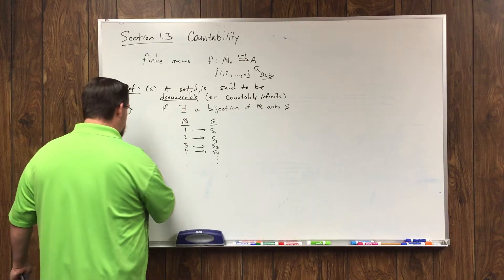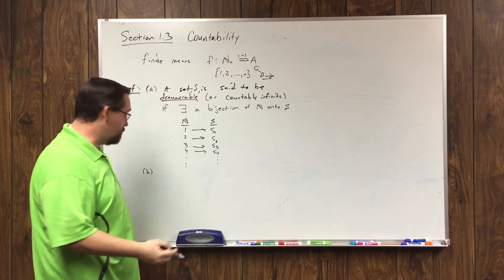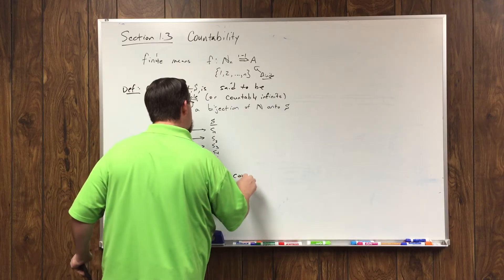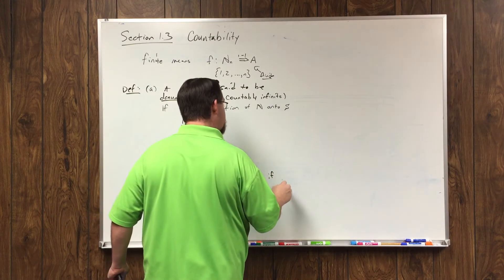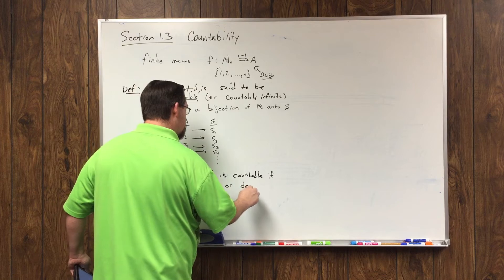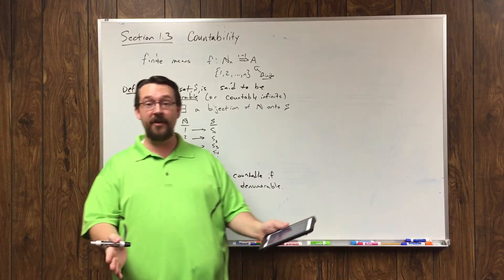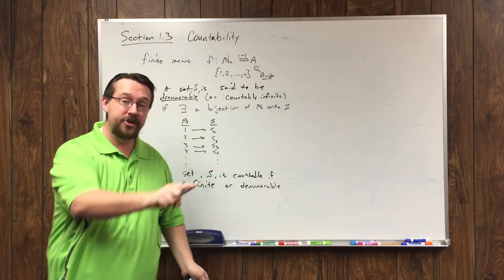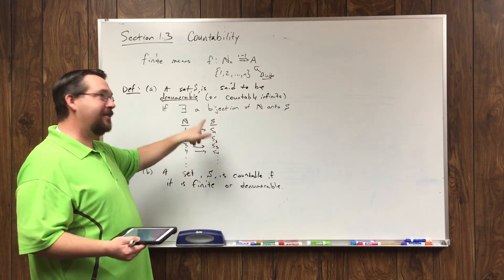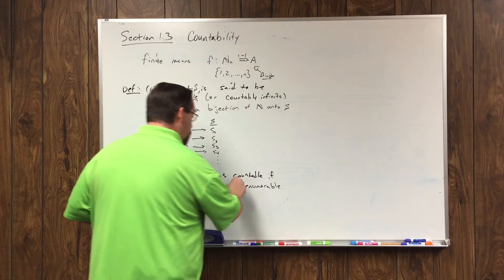Now, we'll use the word countable, then, to refer to any set that is either denumerable or finite. So, a countable set, or a set S, is countable if it is finite or denumerable. So, countable sets can be finite. That is, if you can count up the total number of elements in a set and be done, that's countable. But, also, if it is denumerable or countably infinite, meaning you can start counting them and then basically do the dot, dot, dot, and it continues on in the same way, then that's what we will call a countable set.